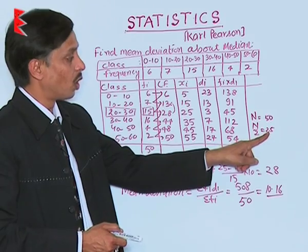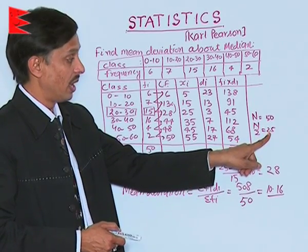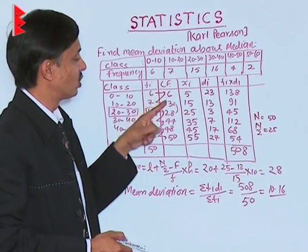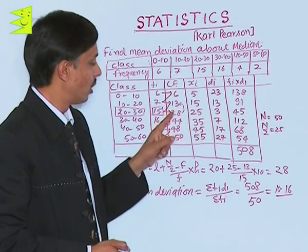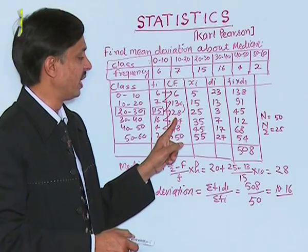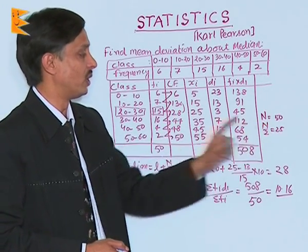The closest or more than N by 2 in the cumulative frequency column: 6 is not closest, 13 is not, 28 yes, 28 is closest to N by 2.